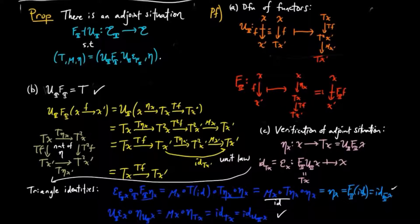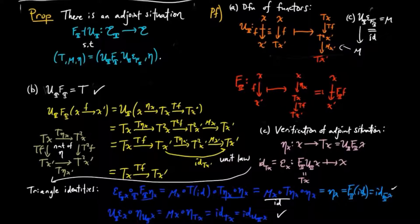Finally, we need to show that the induced multiplication is the same as the multiplication for the monad T. This is straightforward since the forgetful functor post-composes a morphism by the multiplication mu, and the counit by definition is the identity in E, which is preserved by T. And that completes the proof.